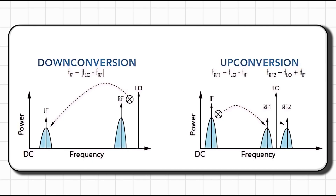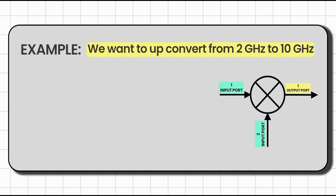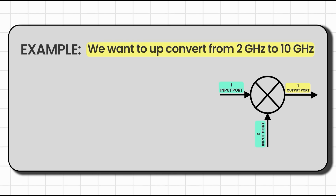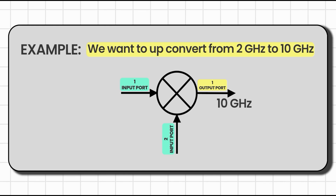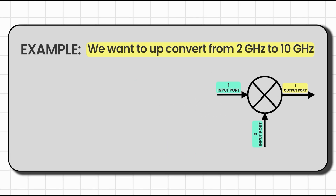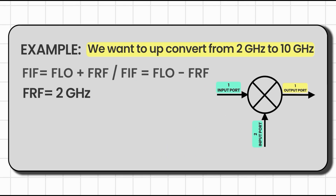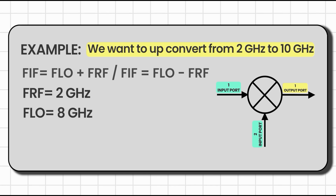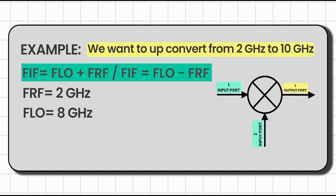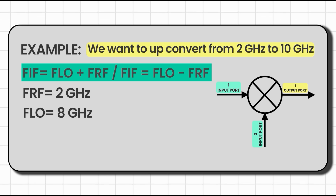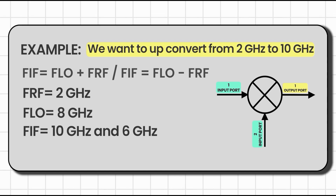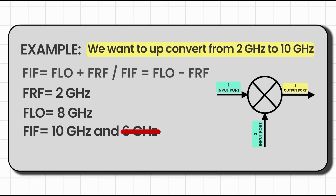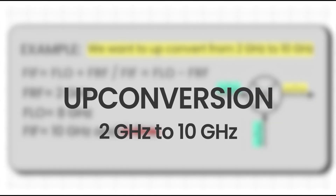Let's understand this with an example. Say we want to up-convert from 2 GHz to 10 GHz. If we add 8 GHz to the input frequency, we achieve 10 GHz. Applying the formula with RF = 2 GHz and LO = 8 GHz: FIF = FLO ± FRF gives 10 GHz and 6 GHz. Since we want to keep 10 GHz, we add a high-pass filter to reject the 6 GHz component. This is up conversion — we converted from 2 GHz to 10 GHz.